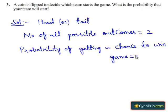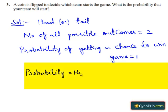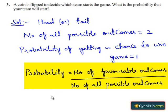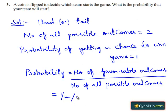Therefore, probability of winning a team is equal to number of favorable outcomes by total number of all possible outcomes, which is equal to one by two. Therefore, probability of winning a team is equal to one by two.